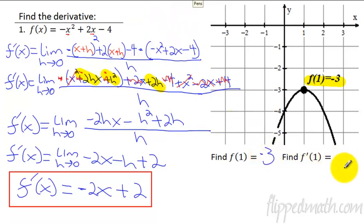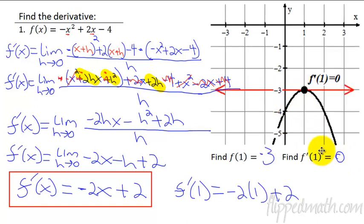What about this f prime of 1? That means what is the slope at the exact point of x equals 1? We plug this into here. So you take f prime of 1, and then that's going to equal negative 2 times 1 plus 2, and we're going to get 0. So the slope of this thing at the x value of 1 is 0. That line in red there is representative of the tangent line, and you can see the slope of that is 0. That's the derivative.